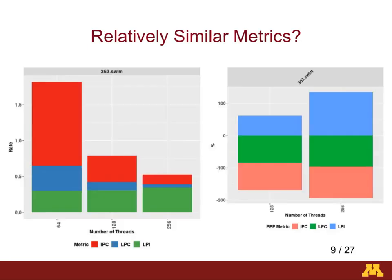We propose the use of the purchasing power parity (PPP) rates. Purchasing power parity can show the relative changes between ratios. In the case of 363.swim, the instructions per cycle and loads per cycle rates can be clearly seen to change as the number of threads increases — decreasing. But the loads per instruction rates look identical or very similar. When the rates are normalized using purchasing power parity, the relative changes can be seen. Loads per cycle rates increase over 50% for 128 threads and over 100% for 256 threads when compared to the baseline of 64 threads.